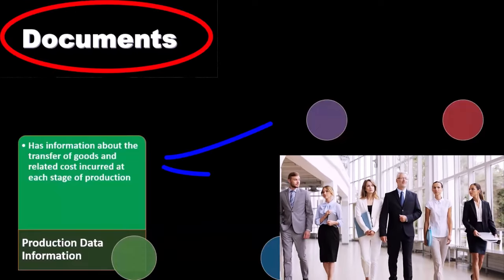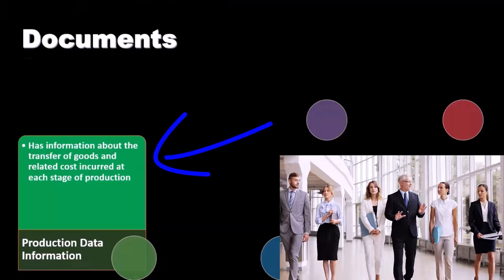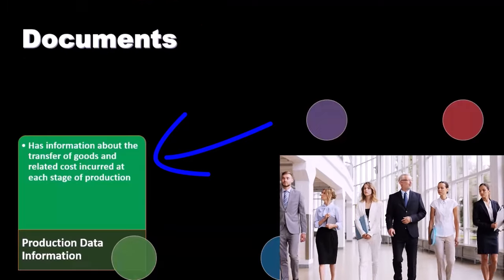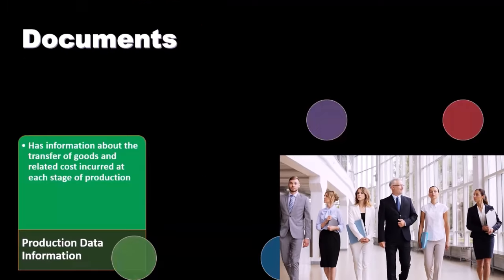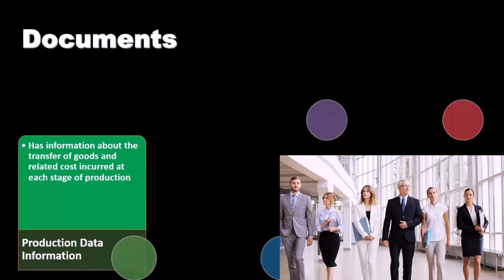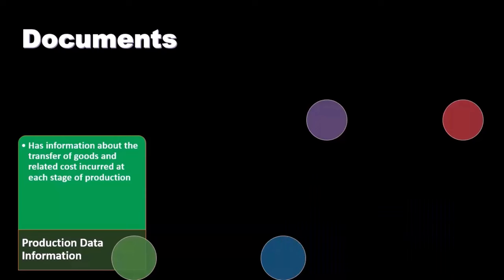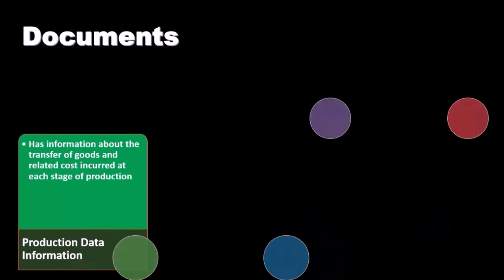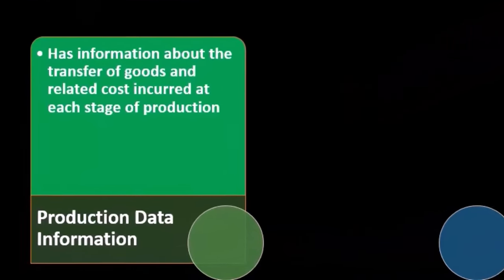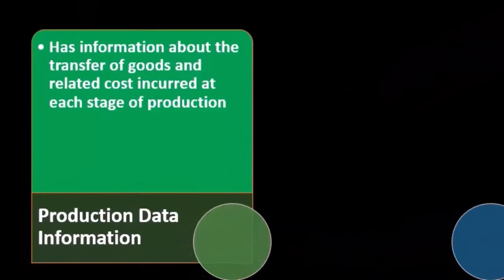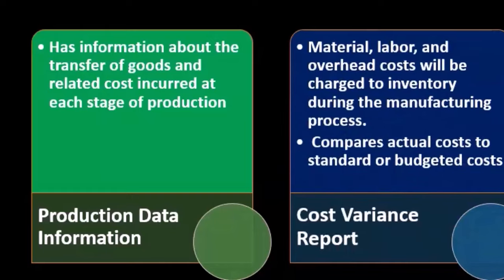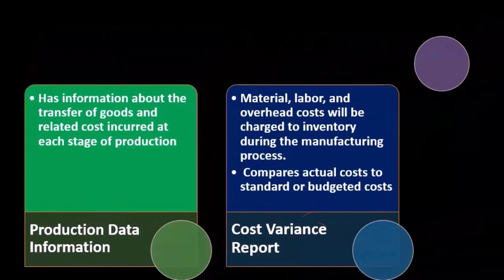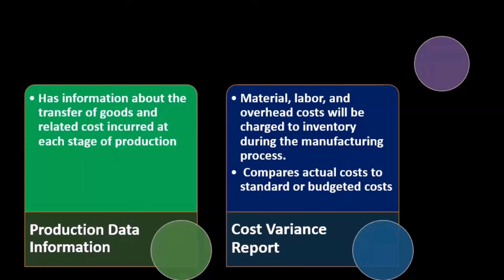Production data has information about the transfer of goods and related costs incurred at each stage of production. As we think about producing inventory, production data tracks the transfer of goods and the related costs incurred at each stage of that production level.